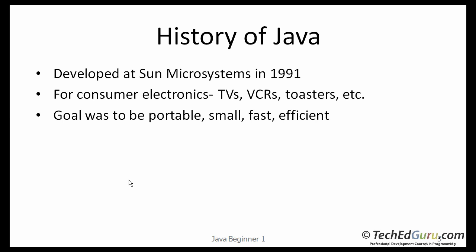Looking at the history of Java, it has been around for a while. Originally developed at Sun Microsystems in 1991, they wanted to develop a programming language for small devices like TVs, VCRs, toasters, ovens, etc. Their goal was to make a portable, small programming language. Originally the language was known as Oak, and it was released as Java in 1995.